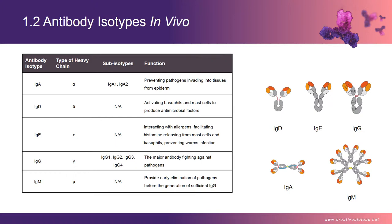IgA concentrates in body fluids to guard the entrances of the body. Human IgA constitutes only 13% (2.1 mg/ml) of the antibody in human serum, but it is the predominant class of antibody in extravascular secretions. They are monomeric in blood; IgA1 is the most prevalent form in serum, but IgA2 is slightly more prevalent in secretions.